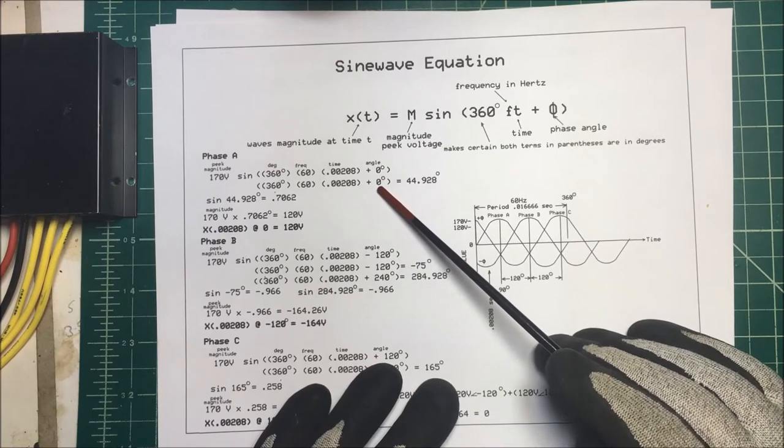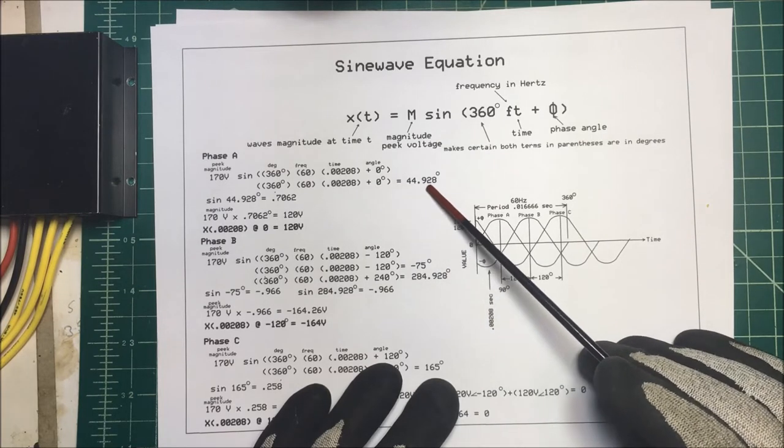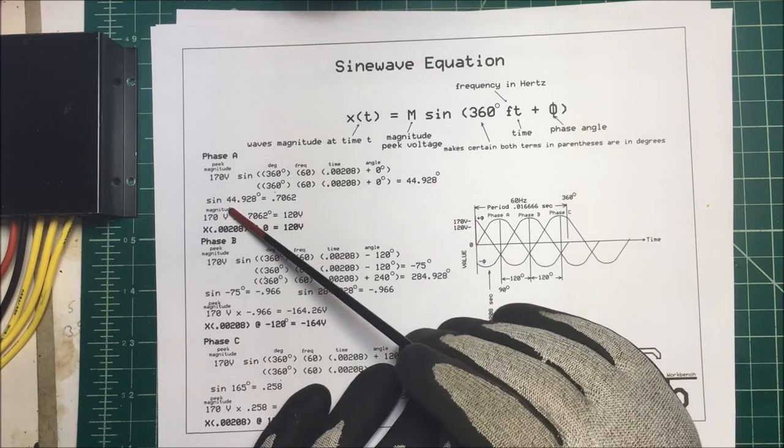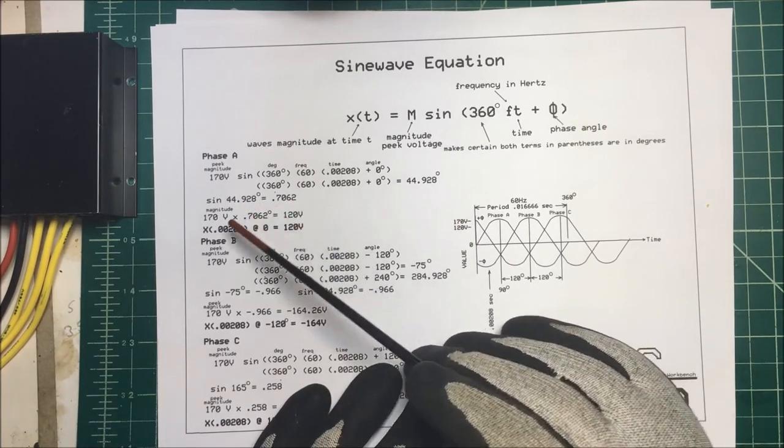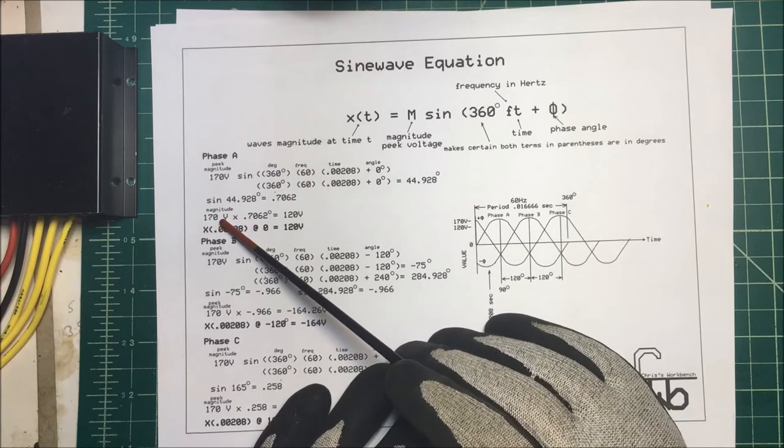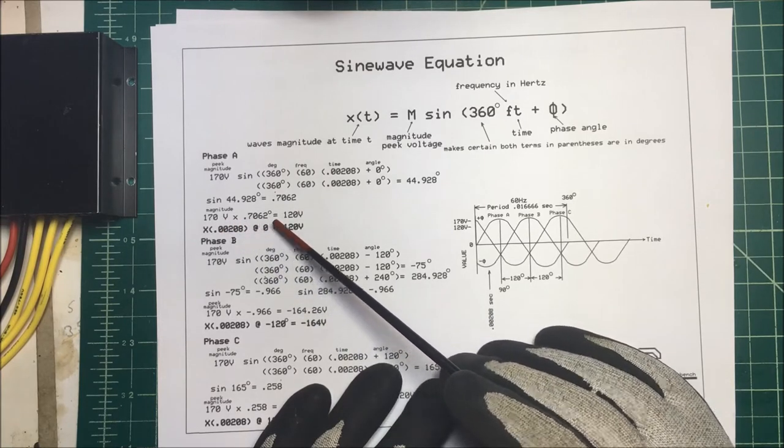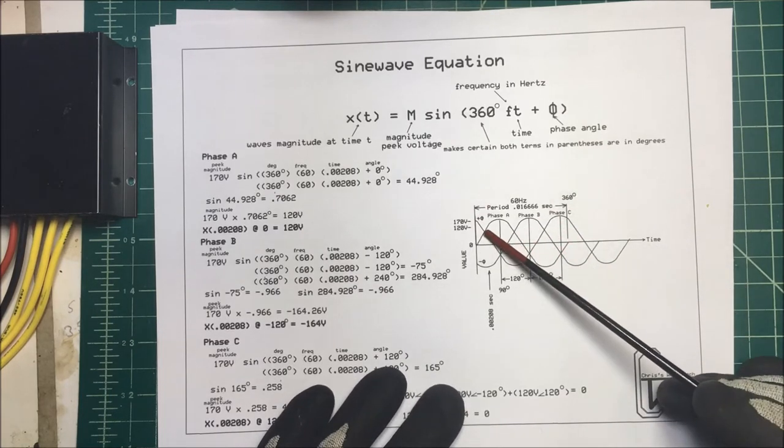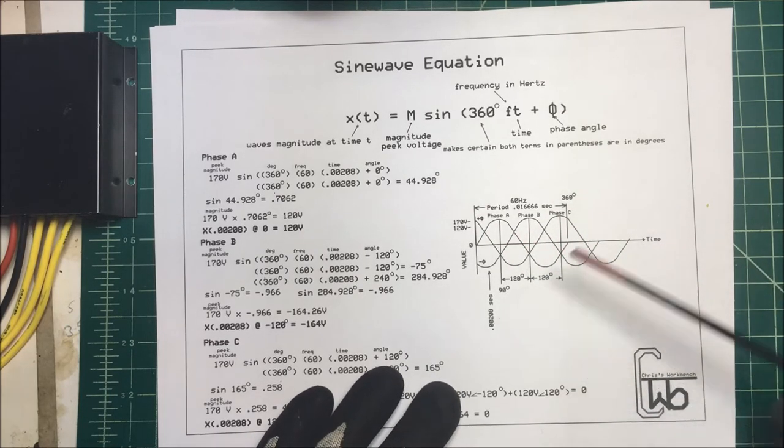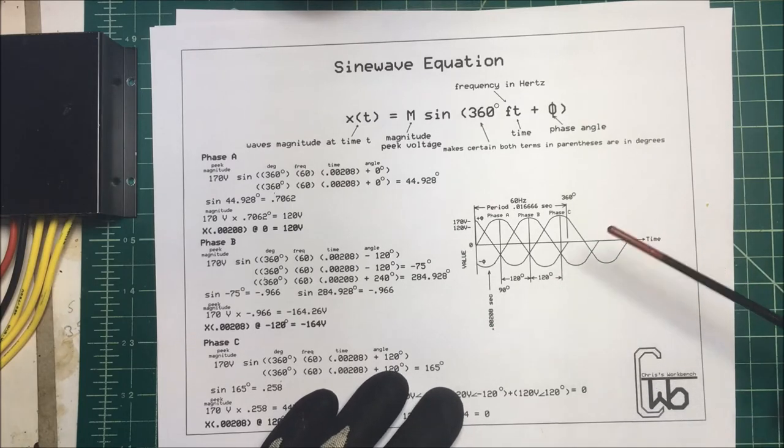Plus our zero degrees and it comes out to 44.928 degrees. We take our sine of that and that comes out to 0.706, and we take 170 volts times 0.706 and it gets to 120 volts. That's going to be our RMS value and that's why I picked this value, this time here.